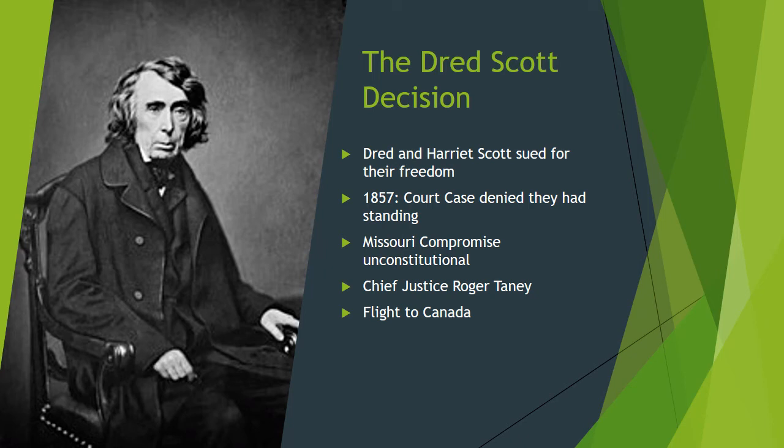Martin Delaney was the father of Black nationalism. He talked about how African Americans should immigrate to Canada, Central and South America, the West Indies, and West Africa. The first national immigration convention was held in Cleveland in 1854. By 1859, Delaney and Robert Campbell, a Jamaican chemist, traveled to Africa in search of land for settlement along the Niger River Valley. James Theodore Holly, an Episcopalian priest and missionary, argued for immigration to Haiti and led 101 Black people to an ill-fated, short-lived settlement there.